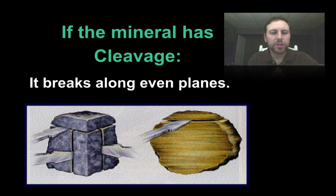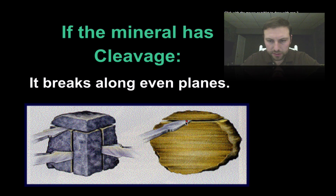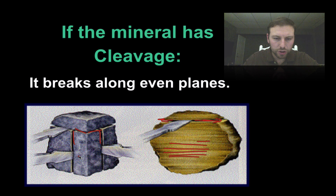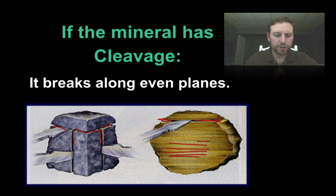If a mineral has cleavage, it breaks along even planes. You can see here this person putting in a scalpel and breaking the mineral apart into nice flat planes. There are very faint lines going through — those are the planes at which the mineral will break. Sometimes it'll break apart into little rectangles or cubes, or at 90 degrees. There is a pattern to how it breaks.